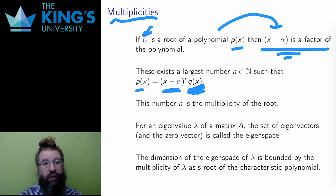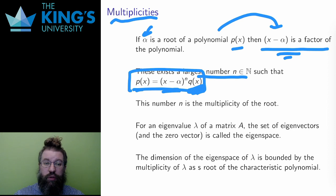After factoring it out some number of times, it will be finally gone. So, the largest number n, such that x minus alpha is a factor of the polynomial, is called the multiplicity of the root alpha.